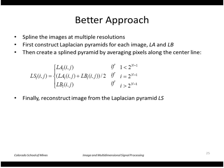A better approach is to use Laplacian pyramids to do the splining. The idea is simple: take the two images A and B, construct the Laplacian pyramid for each, calling them LA and LB. Then create a splined pyramid by combining them: for points to the left of the center line, use values from LA; to the right, use values from LB; exactly on the center line, blend the two values. Do this for every level in the pyramid, then reconstruct the image from this splined pyramid.